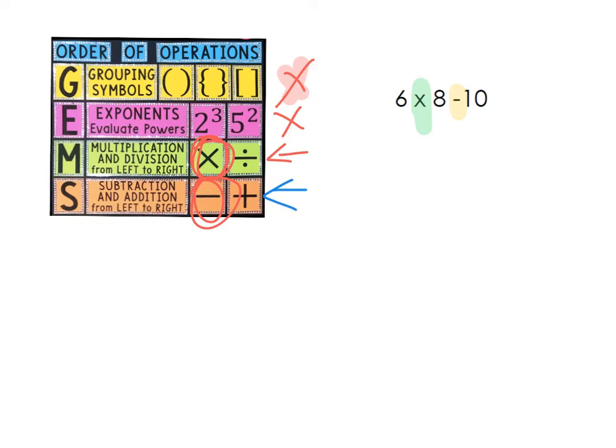So 6 times 8 is 48, and then I bring the rest of the problem down, minus 10, because I haven't used that part yet. 48 minus 10 is 38, and this will give me my final answer for this problem.